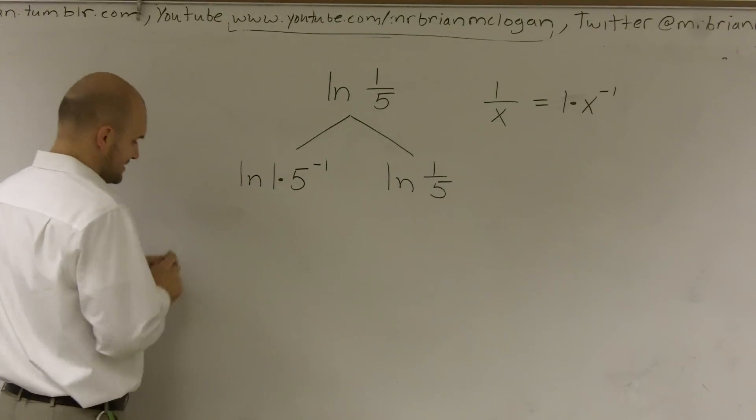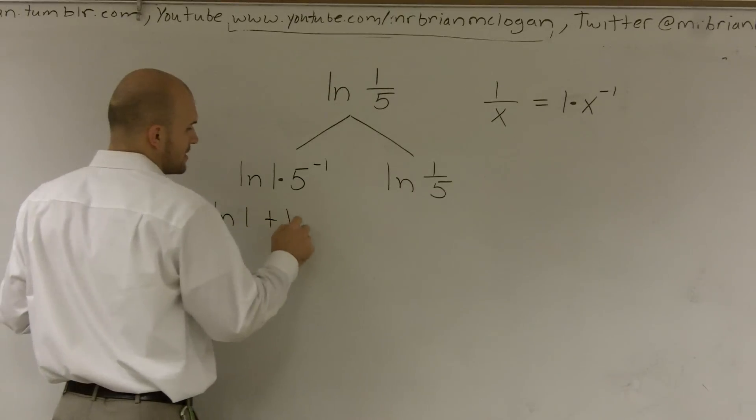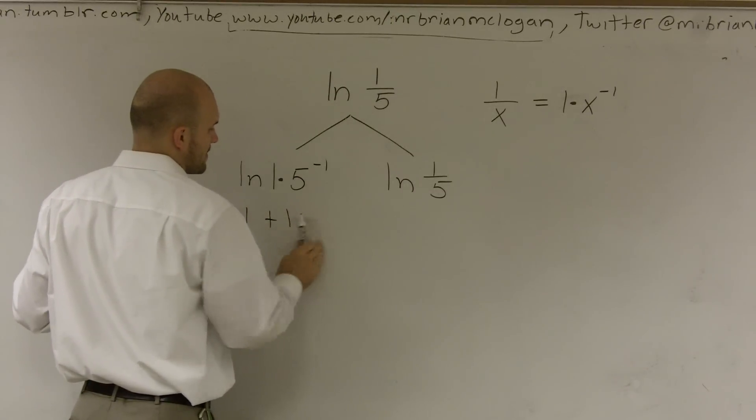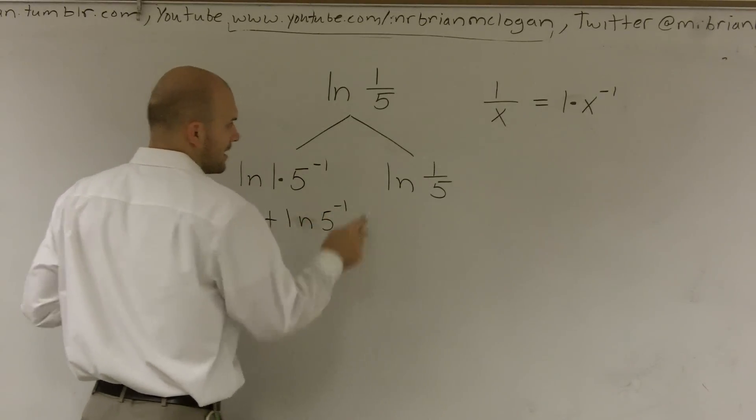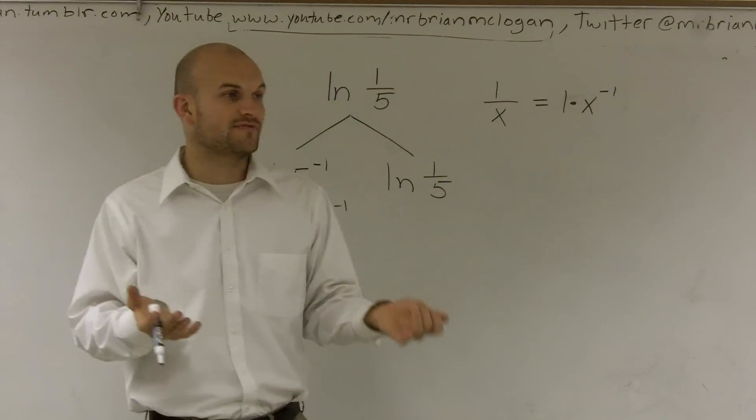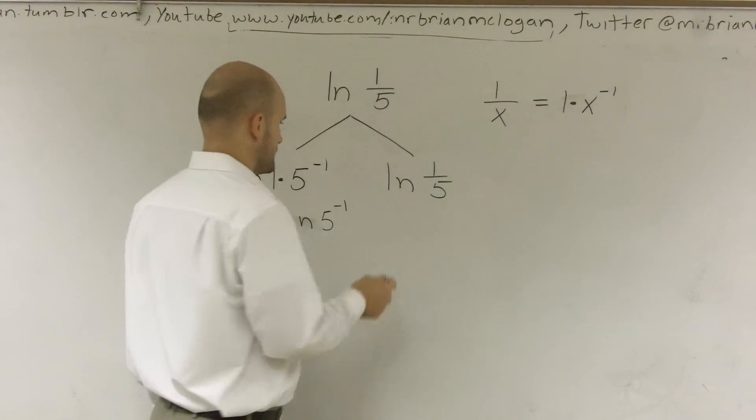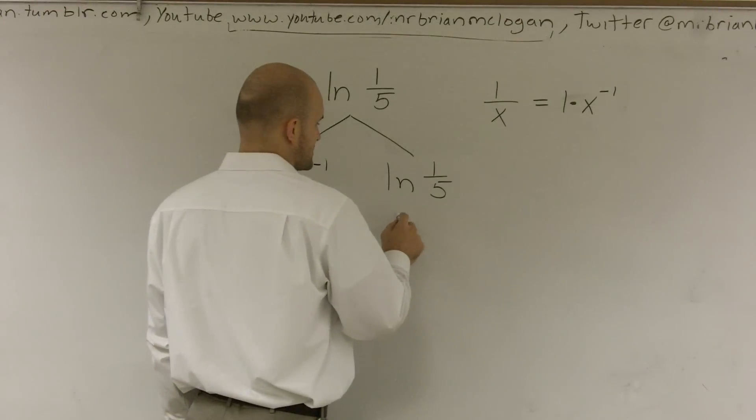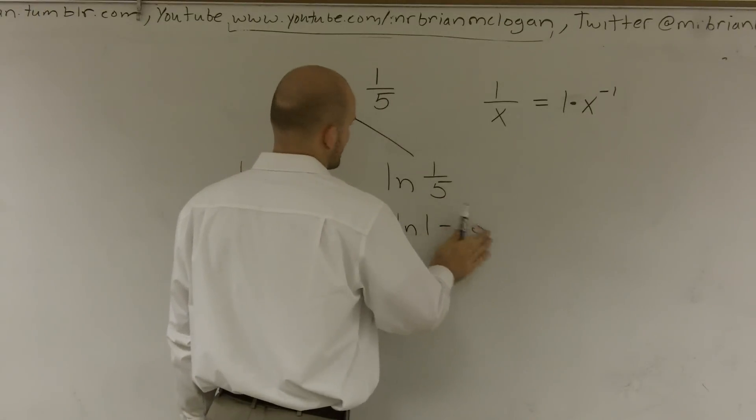So I can rewrite this as ln of 1 plus ln of 5 to the negative first power. And then here, whenever we're dealing with division, you can also write a division problem as a set of two logarithms using subtraction. So I can write this one as ln of 1 minus ln of 5.